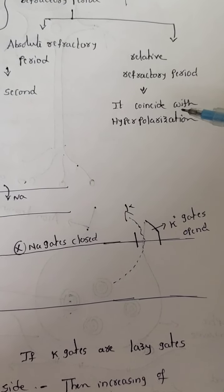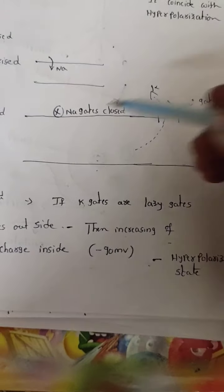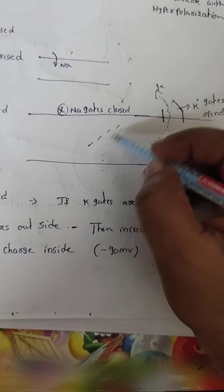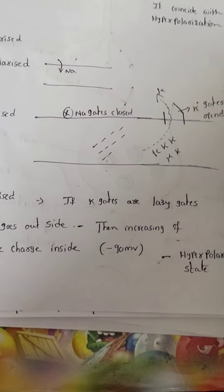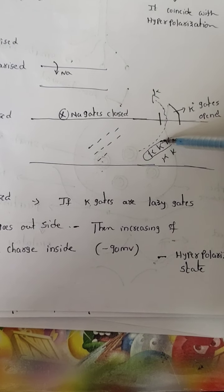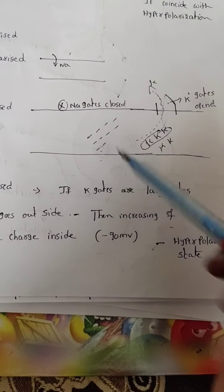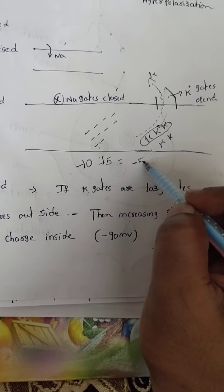The relative refractory period is coincided with hyperpolarization. In the repolarized state, the potassium gates are open. Suppose there are 10 negative charges inside and 5 potassium outside. When the repolarized state occurs and 3 potassium go out, inside you have minus 10 and outside plus 2 remaining, giving you minus 8 inside. Negative charges inside keep increasing while positive charges outside increase.